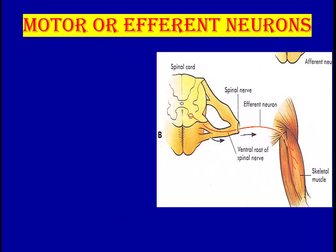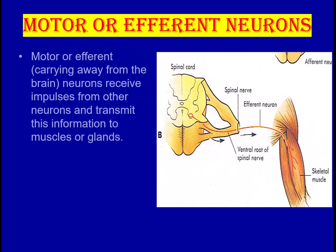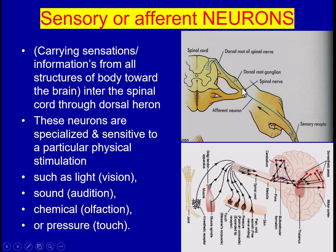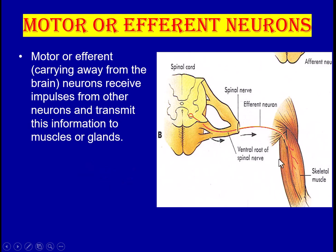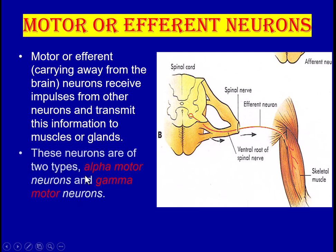The second type is the motor or efferent neuron — efferent meaning it carries information away from the spinal cord. These neurons receive impulses from other neurons and transmit this information to muscles or glands. Motor neurons are further classified into alpha motor neurons and gamma motor neurons.